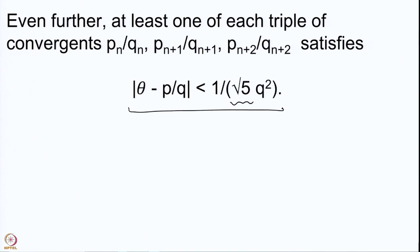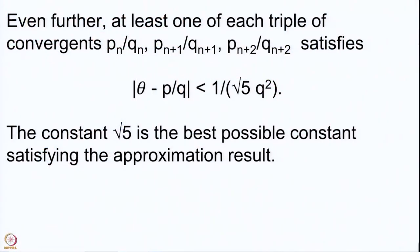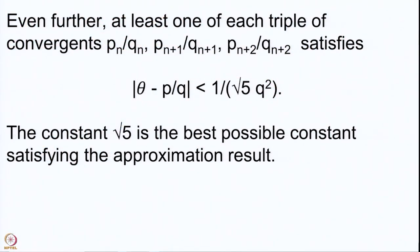One may wonder whether you can improve it further. We went from 1 to 2 to √5. The natural question is can you do even better, and the answer is no — you cannot do better than √5. Root 5 is the best possible constant satisfying this approximation result, meaning there are certain real numbers for whom √5 is the only constant which will give this property.